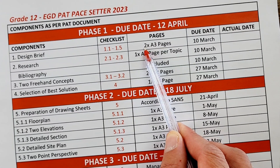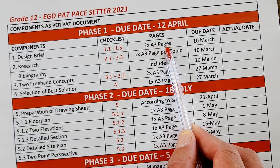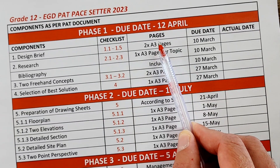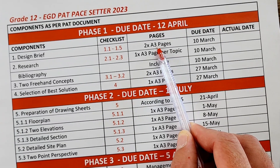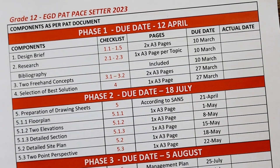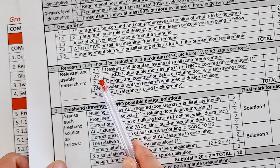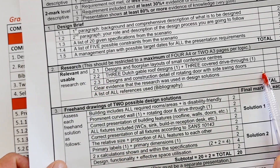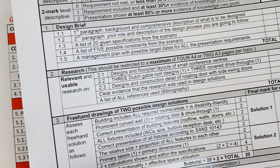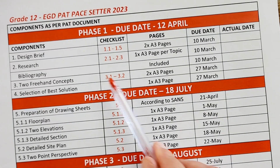It also specifies how many pages of work are required. In my case, I'm encouraging my learners to do two A3 pages — of course this is a guide, your teacher may direct you differently; some prefer A4. Then for the research component, 2.1 to 2.3, the checklist details the requirements for each. In future videos I'll go in depth, but for now I'm just explaining this pace setter.